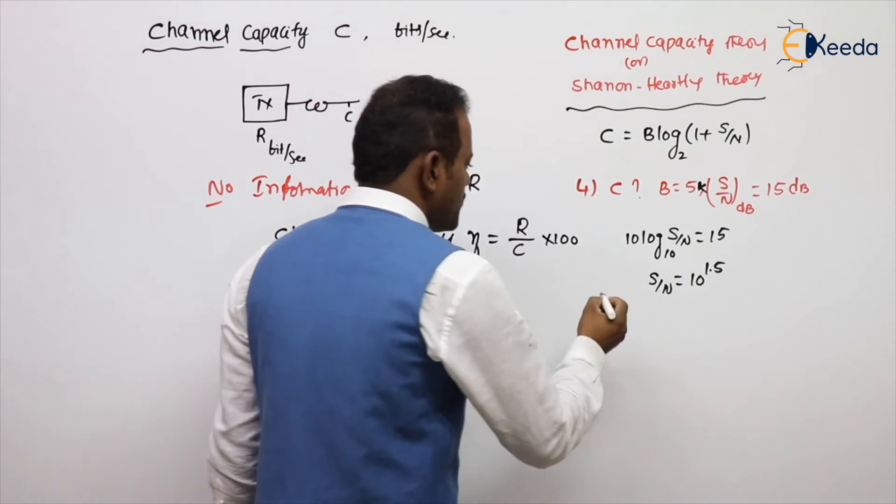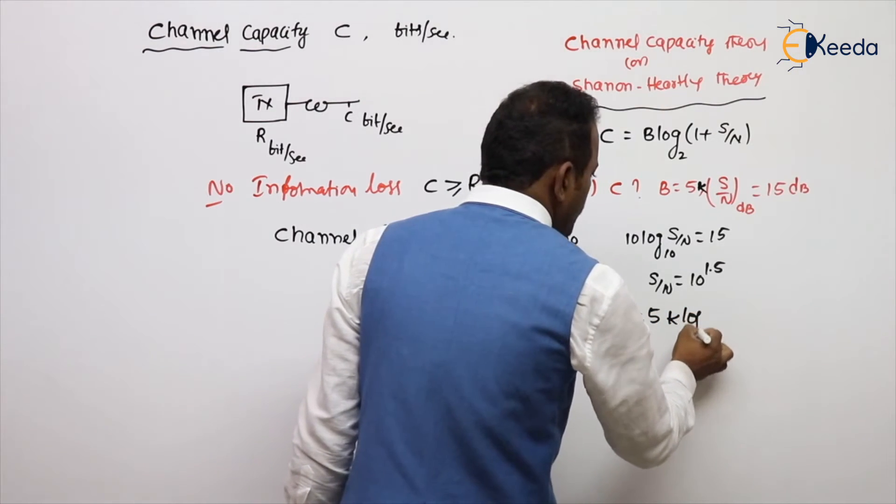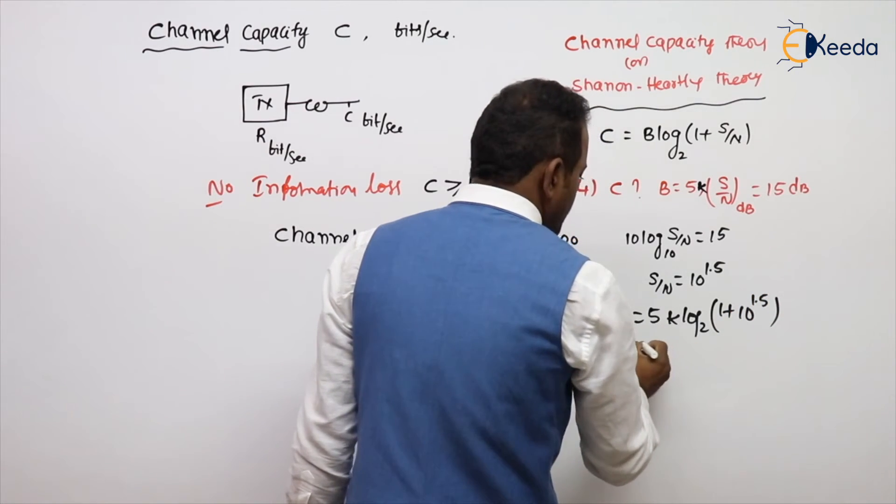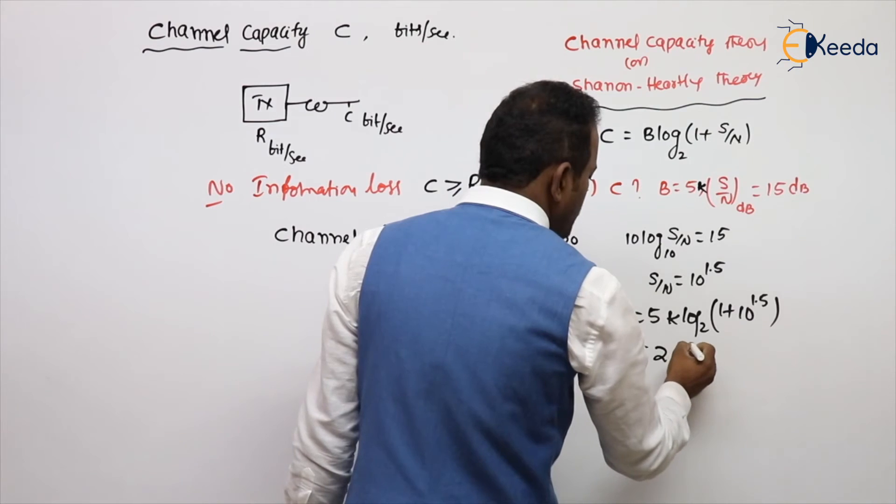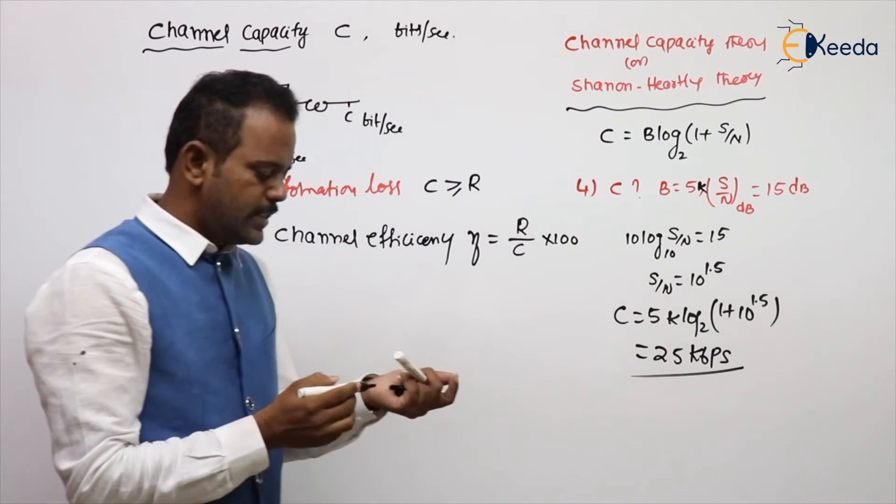Then substitute there: C equals B value 5k log base 2 of 1 plus 10 to the power 1.5. Then how much you will get is approximately 25 kbps. That is the thing.